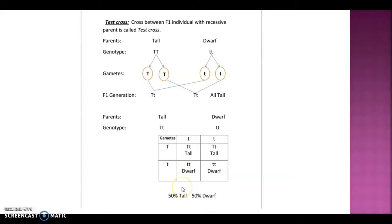The result is a ratio of 1:1. Test cross is one kind of back cross, but specifically the cross occurs between the F1 individual and its recessive parent. This test cross is useful to know the genotype of an unknown individual, and that's why it is called a test cross.